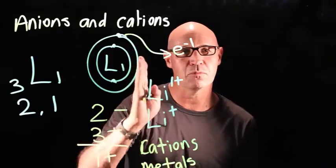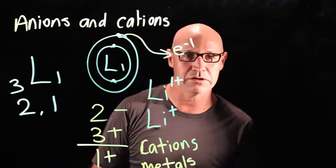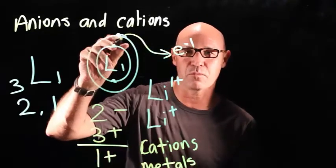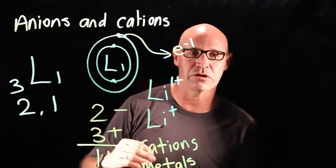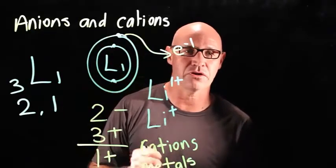They're in groups one, two and three in the periodic table. They're the ones with one, two or three electrons in their outer shell and they have a tendency to donate electrons.